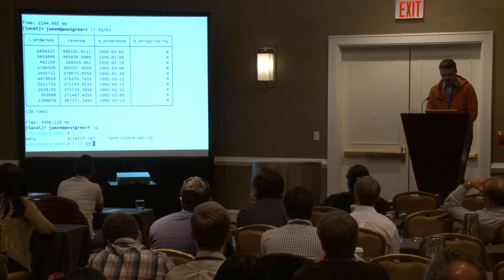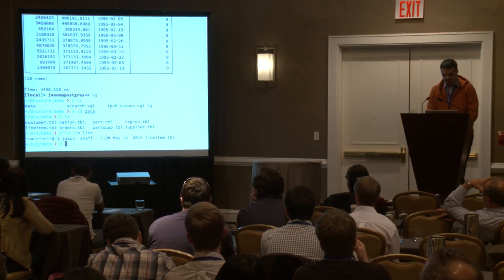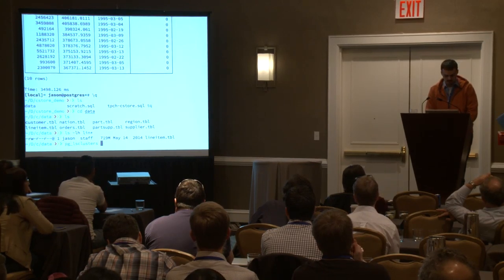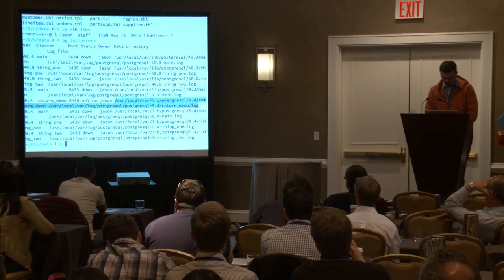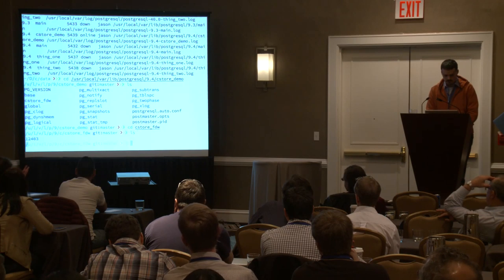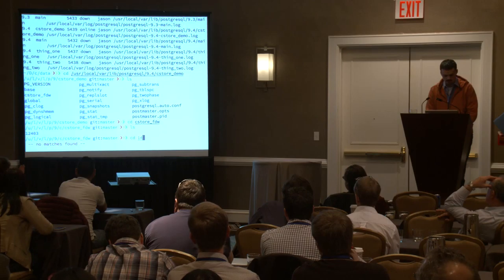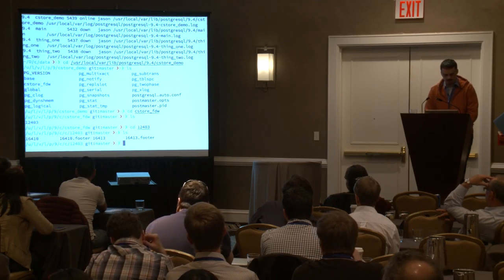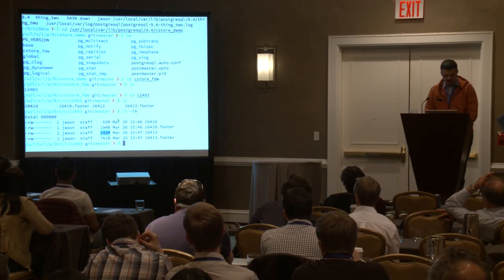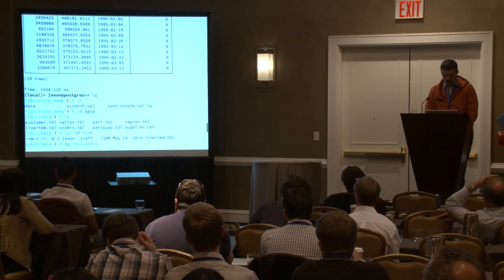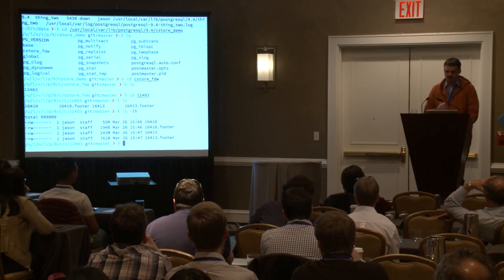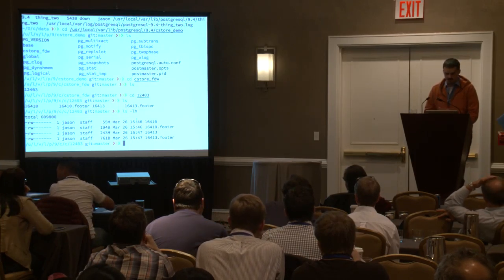If we look at the line item file at 719 megabytes, then go over to the C-Store demo data directory, we see the relation IDs of the two tables — one is line items, one is orders. Line items is 243 megabytes out of a starting 719 — we're saving about 500 megs. That's not just a disk space thing; it also affects your OS's page cache since reading compressed pages prevents IO, and it also lets you store more on your machine.